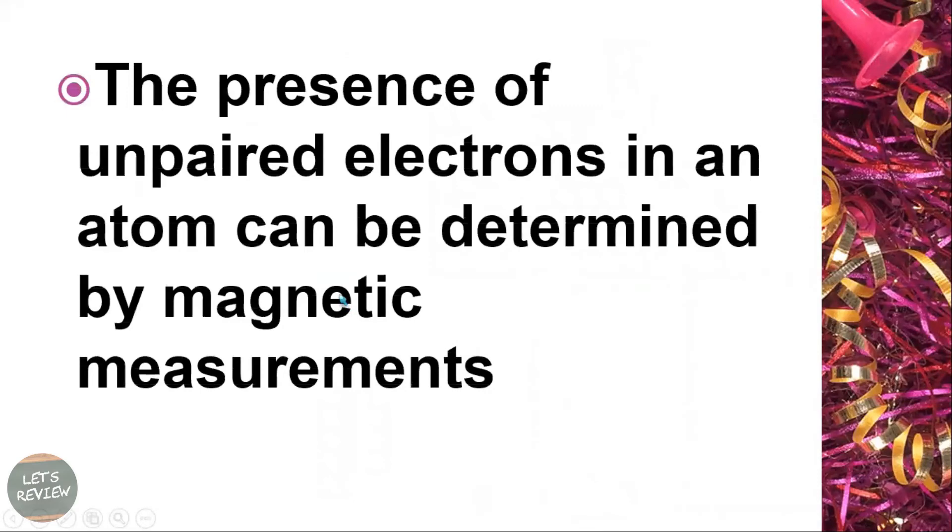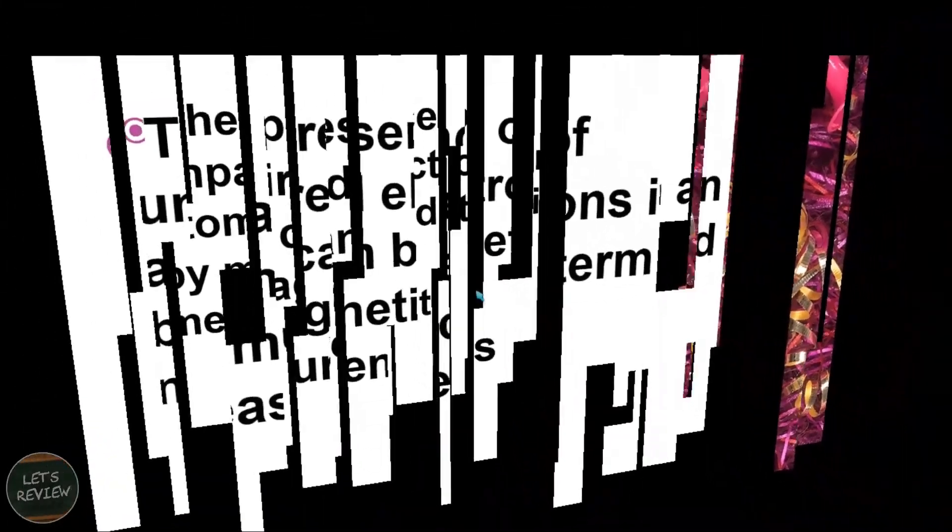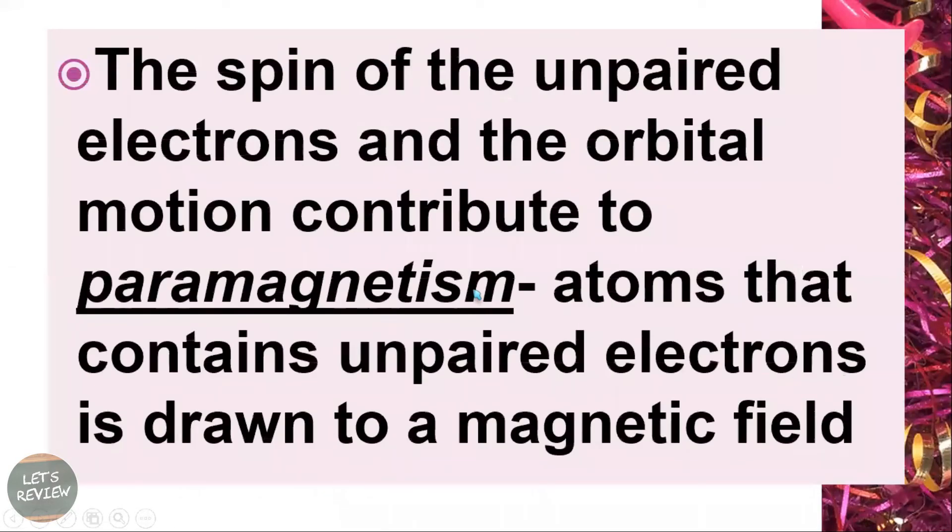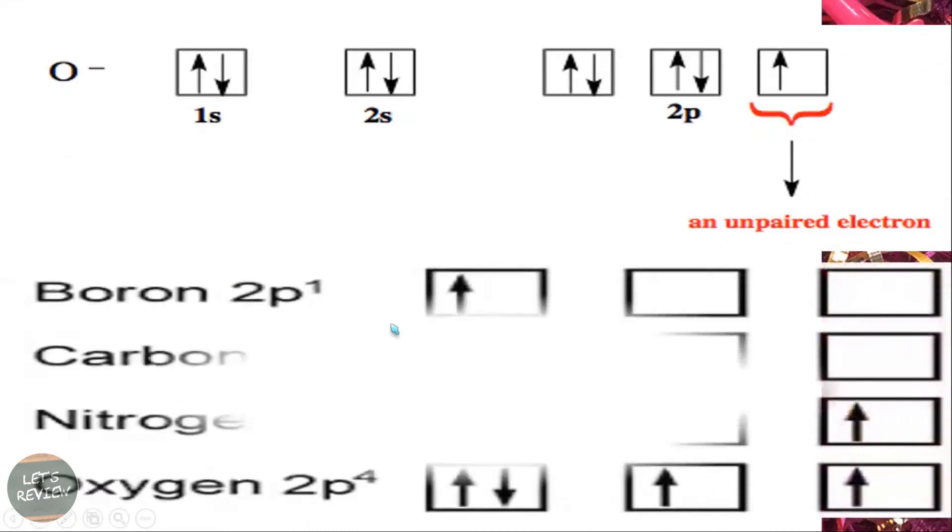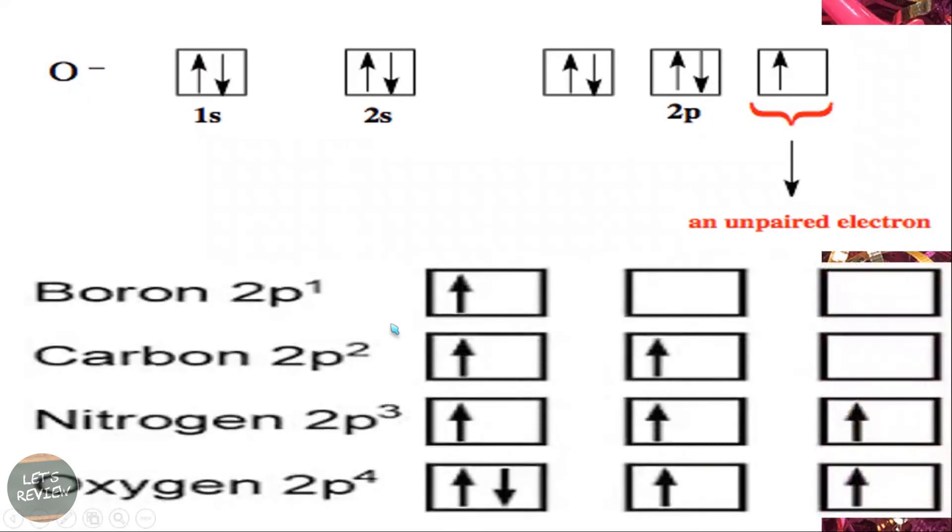So the presence of unpaired electrons in an atom can be determined by its magnetic measurement. The spin of the unpaired electrons in the orbital motion contribute to paramagnetism. Atoms that contain unpaired electrons are drawn to the magnetic field, like this, an unpaired electron, that is paramagnetism. And here are the examples of elements within an unpaired electron.